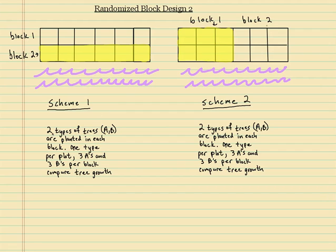Here's the problem: we have two types of trees, A and B, planted in each block. One type per plot, so each plot can only be an A or a B. We're going to have three A's and three B's per block, and we're going to compare the tree growth.